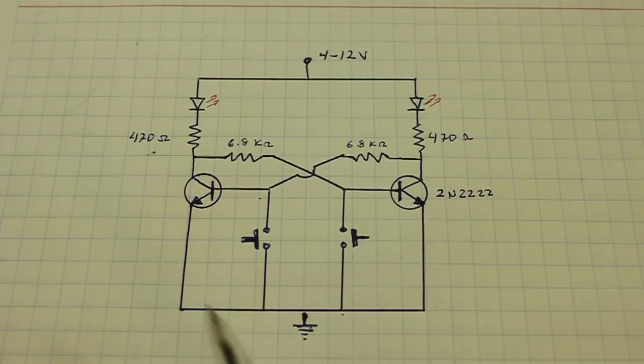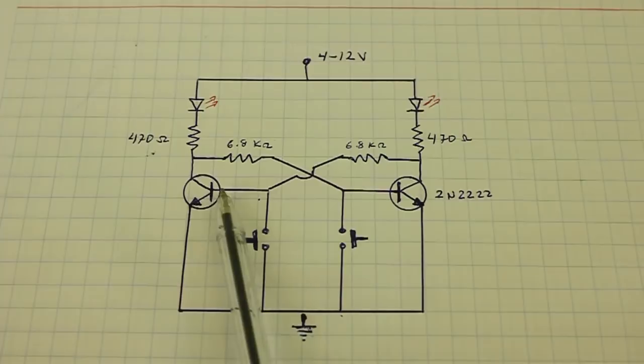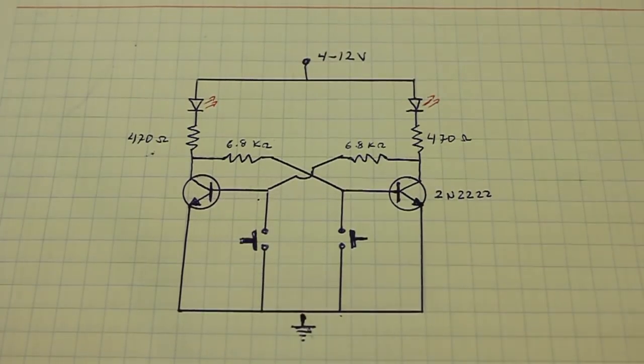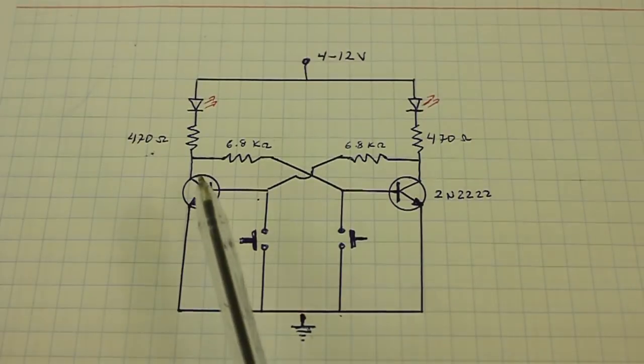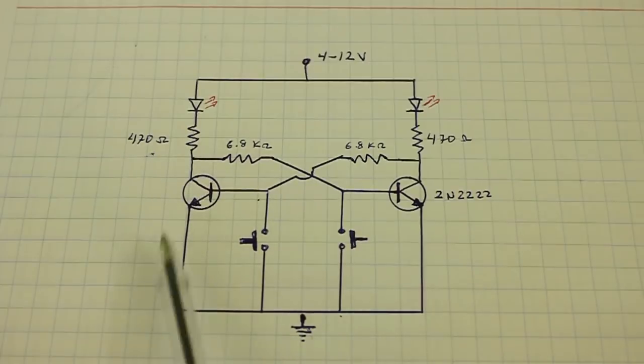Now, what happens if we press this switch? The base of the transistor goes to zero volts, so the transistor is now off and the current no longer can flow through this path.